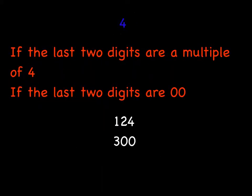For four, if the last two digits are a multiple of four, then it has four as a factor, or if the last two digits are zero zero. For example, in 124, 24 is a multiple of four, and you're just going to have to have those multiples of four memorized. So that means 124 is a multiple of four. In this example, zero zero are not a multiple of four by itself, but if the number ends in zero zero like 300, well, 300 has four as one of its factors.